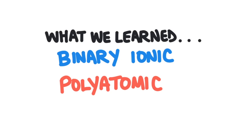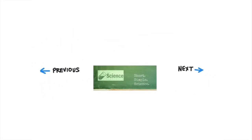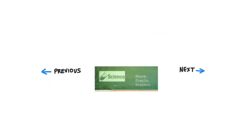In this video, we learned how to name binary ionic compounds and how to name compounds with polyatomic ions. You can support the Science Classroom by subscribing to this channel and liking the video. You can also support us on Patreon by clicking the link in the video or the description.